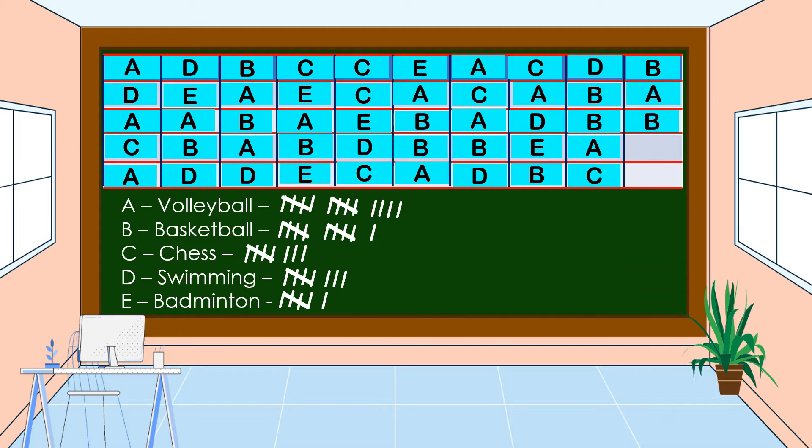These are the results for the survey. For volleyball, we have 14; basketball, 12; chess, 8; swimming, 9; and badminton, 7. We have 50 respondents in this survey.